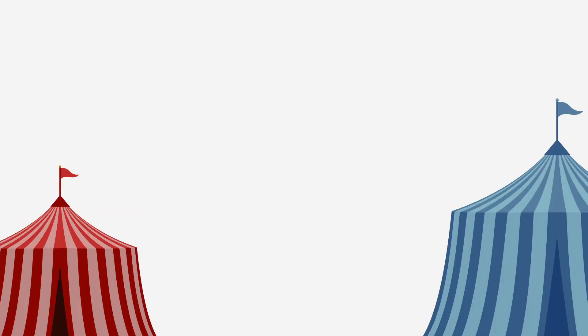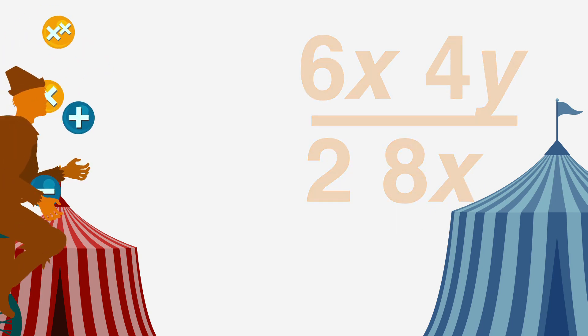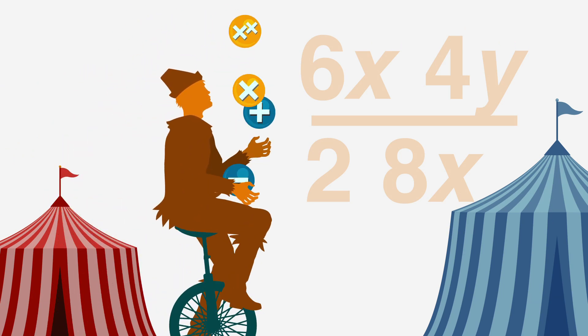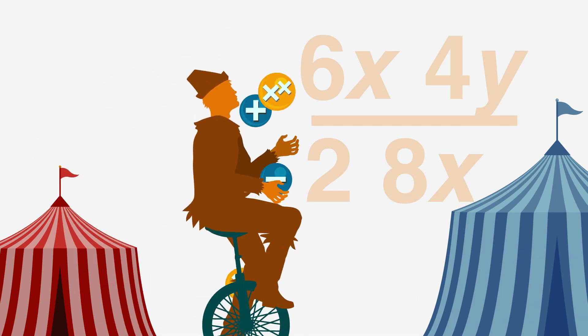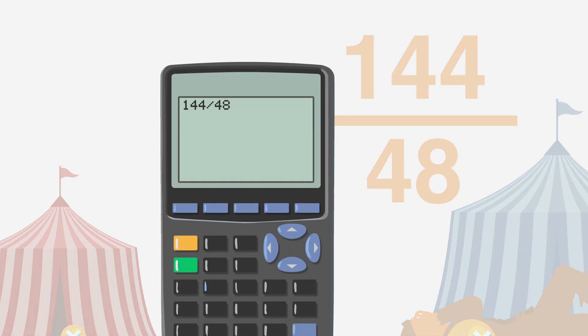ACT problems often involve complicated fractions. If the numerator or denominator of a fraction has either multiplication, addition, subtraction, or exponents, you can avoid errors by finding the numerator and denominator separately and then dividing the result using the calculator.